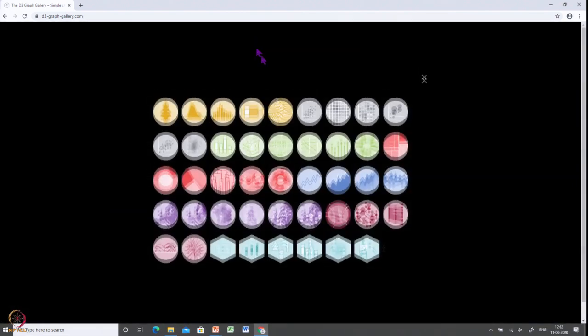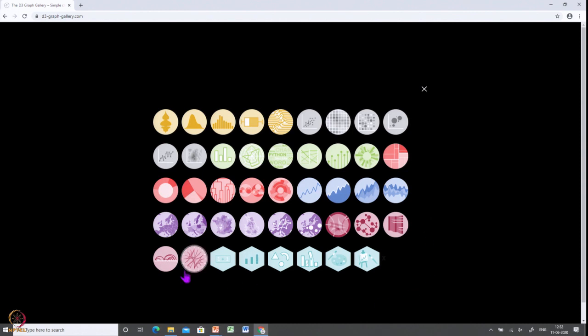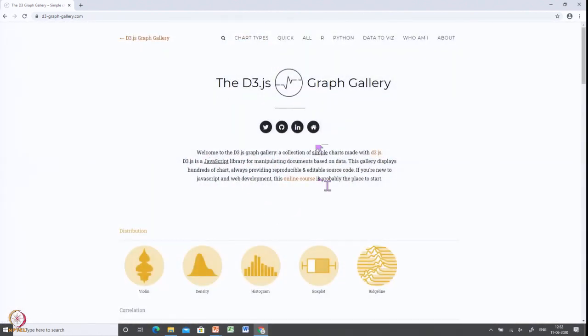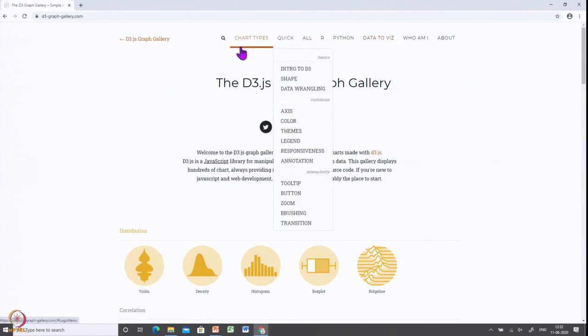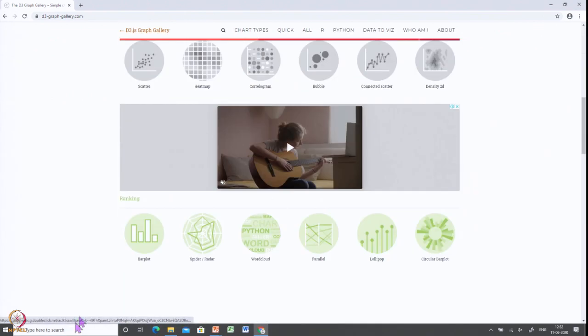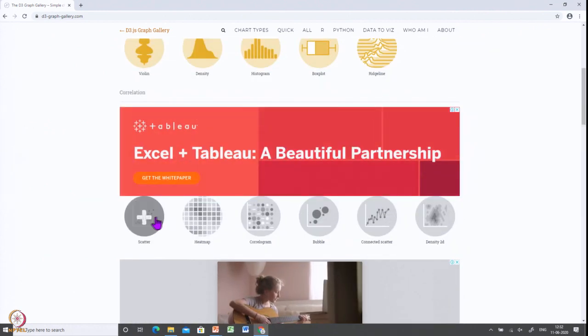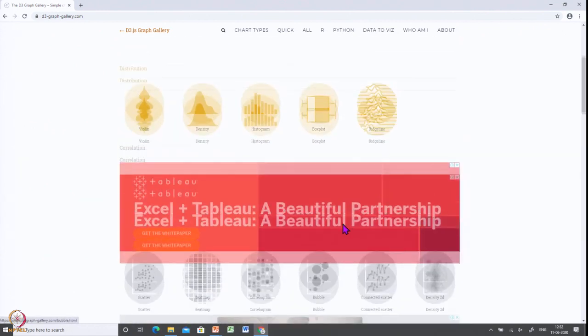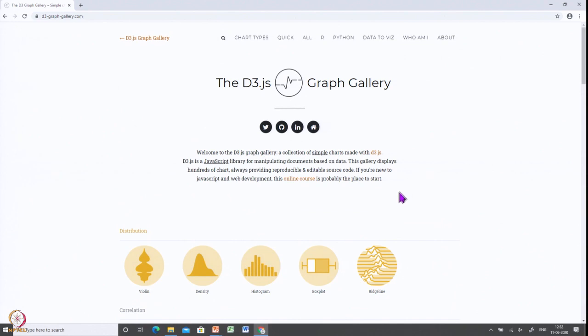If you look at the chart types, all different chart types are given in this website like violin chart, area chart, histogram, box plot, everything. You can pick a chart based on scatter plot, heat map, histogram, box plot, or ridge graph. Let us look at data to visualization.